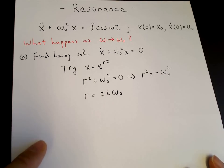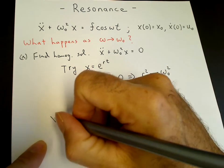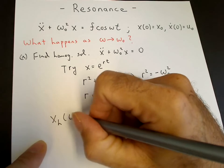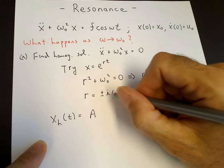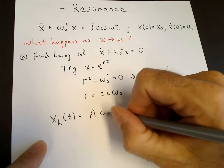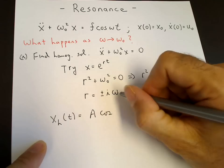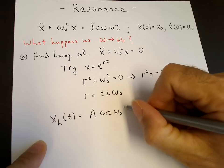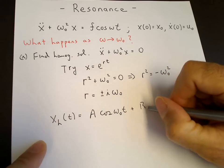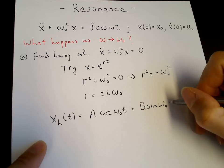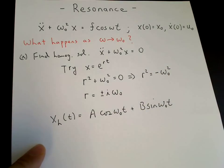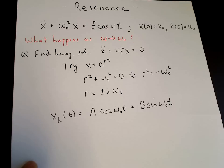The solution of the homogeneous equation is a constant times cosine omega-naught t plus another constant times sine omega-naught t, since the roots are pure imaginary. This is something you should have been able to guess immediately from the form of the equation.